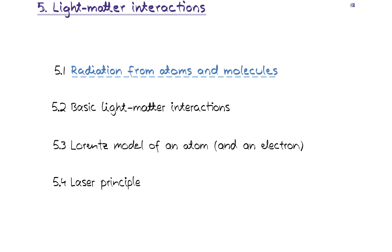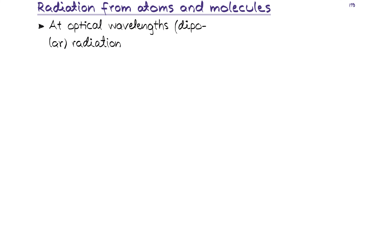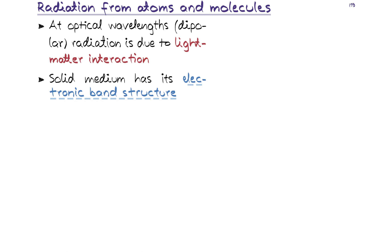Now that I have given the introduction to the whole chapter, let me start the actual first lecture. We are interested in radiation of light — how atoms and molecules, the tiny fundamental building blocks of nature, give rise to radiation at optical wavelengths. Here it is essentially dipolar radiation due to light-matter interaction that is most important. We are interested in small-scale emitters such as fluorescent atoms, fluorescent molecules, and quantum dots. Since they are tiny with respect to the wavelength of light, we can describe their radiation and scattering properties as an electric dipole radiator.